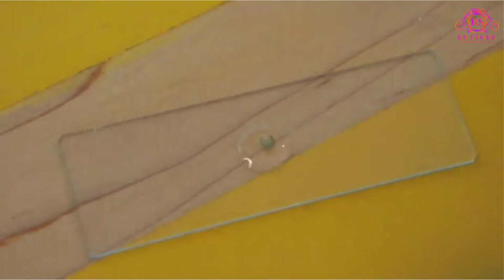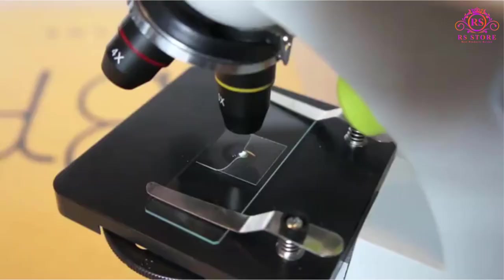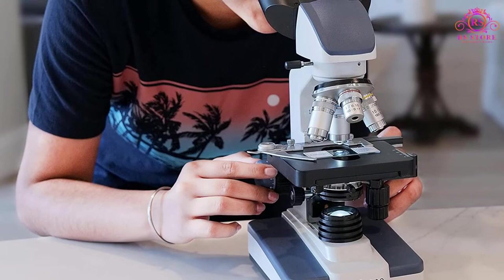Why we like it: this Amscope binocular microscope is fitted with a 360-degree rotation binocular head, which offers a comprehensive view and reduces eye and neck strain. This feature makes the microscope suitable for long-term use such as teaching demonstrations and laboratory purposes.